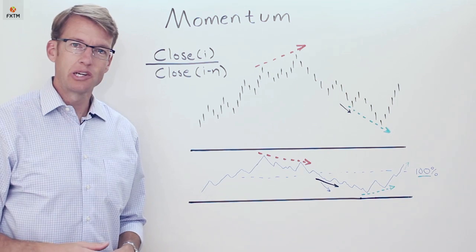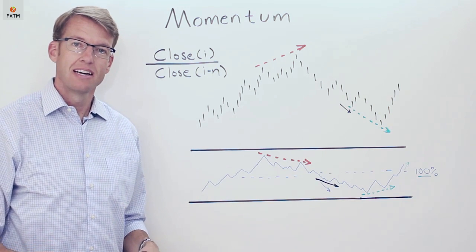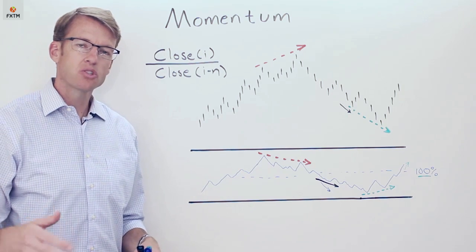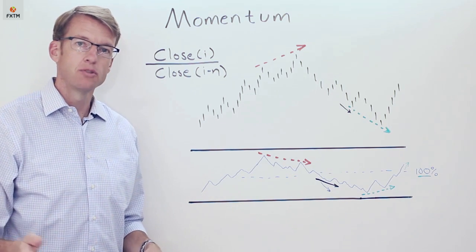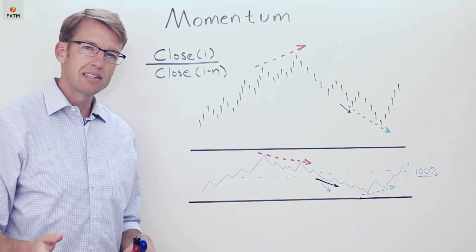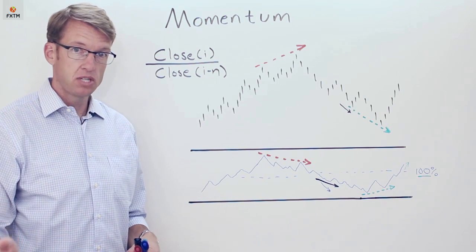The momentum oscillator does a really good job of identifying two things: number one which direction is the trend actually going and number two how strong is that price movement, how much momentum do we really have behind either a bullish or bearish trend, how likely is it that it may be running out of steam and even potentially reverse.